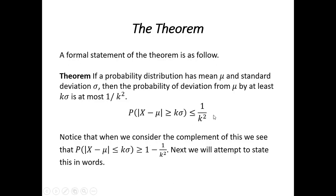It's a little bit easier to understand this when we consider the complement, which tells us the probability of a deviation being less than or equal to kσ is greater than or equal to 1 - 1/k².